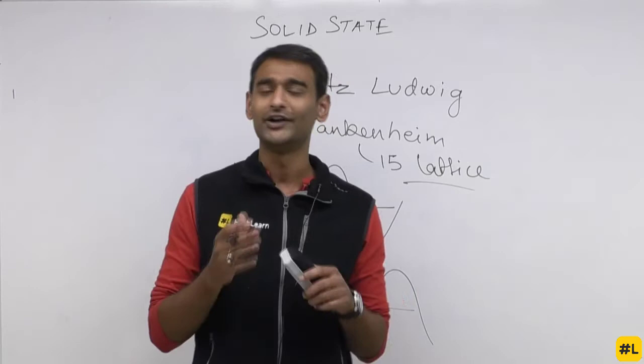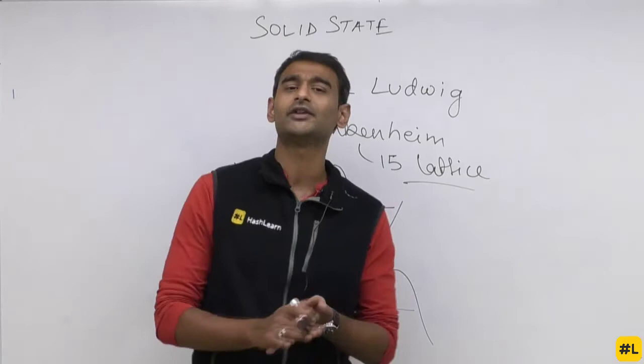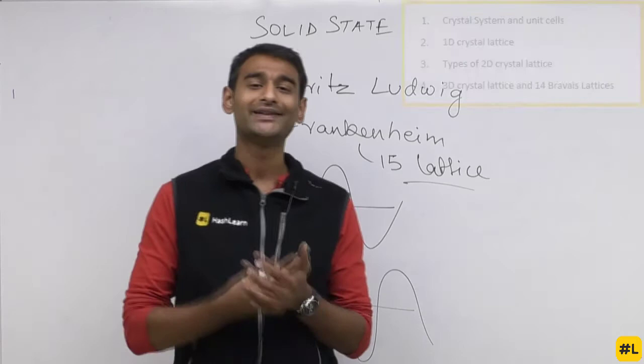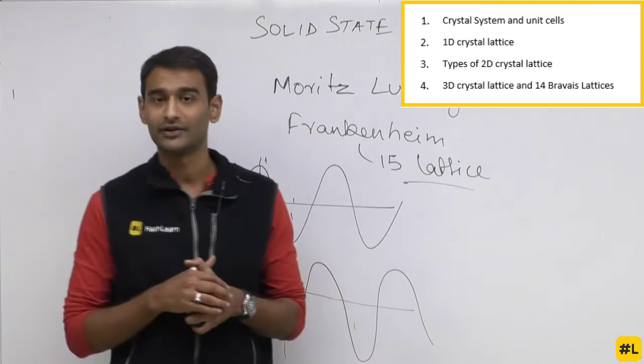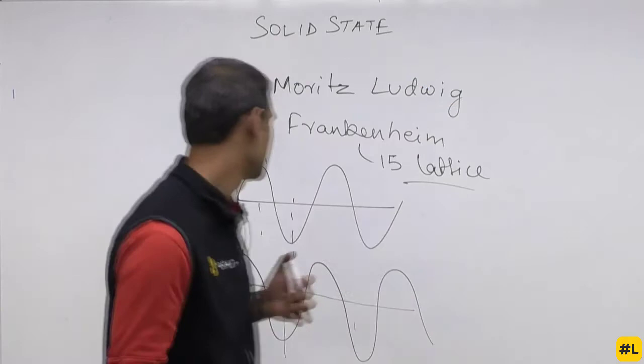Let us do a quick summary of what we are going to do today. We are going to talk about what are unit cells, what are crystal systems, what are lattices, what do you mean by a 1D lattice, a 2D lattice, and a 3D lattice, and what are the different types of 3D lattices.